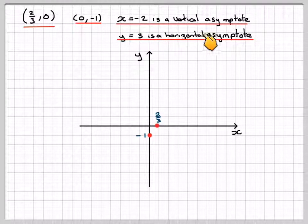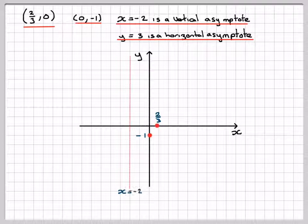Mark on the vertical asymptote, which is going to be there, through x equals minus 2. And mark on the horizontal asymptote, which is y equals 3.